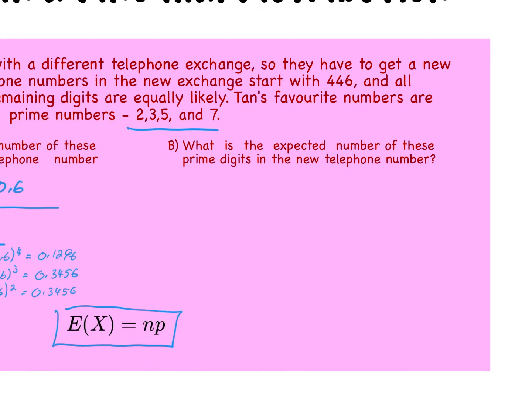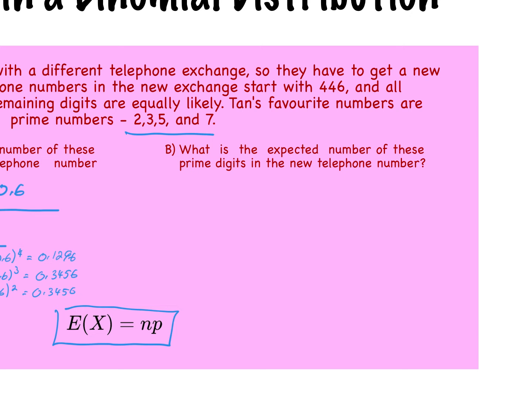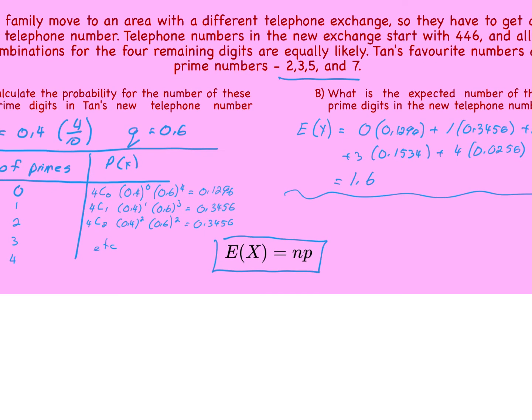So moving on to part B, what is the expected number of these prime digits in the telephone number? Now, we can use the expected value calculation, which is adding up the expected probability. So it's 0.1296 plus 1 times 0.3456 plus 2 times the same value plus 3 times the calculated value and 4 times 0.0256. And when you add all those up, you're going to get 1.6. So that's the expected value calculation, and that's determined from your probability distribution in your chart.